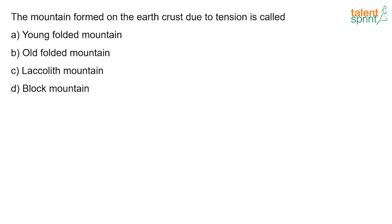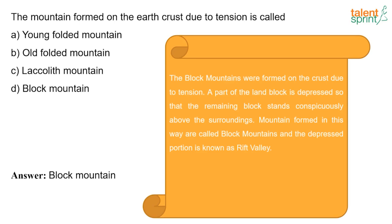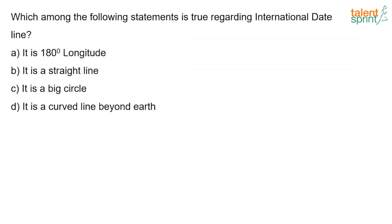The mountain formed on the earth's crust due to tension is called a block mountain. Block mountains are formed on the crust due to tension — a part of the land block is depressed so that the remaining block stands conspicuously above the surroundings. Mountains formed in this way are called block mountains, and the depressed portion is known as a rift valley.